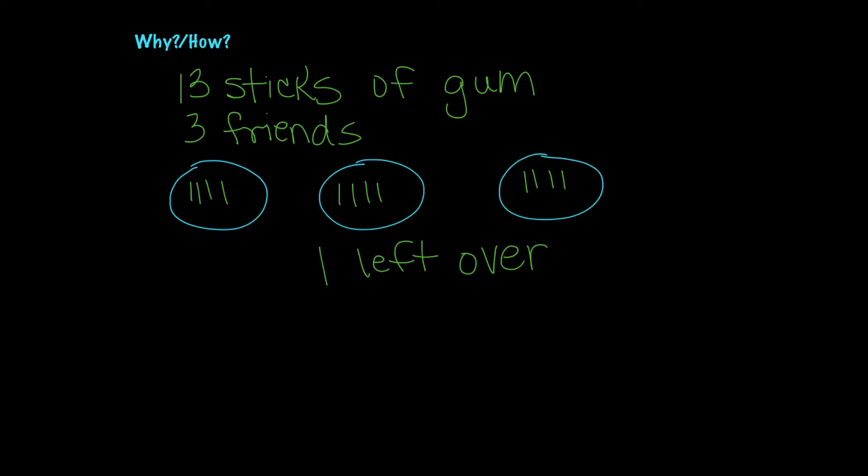So I made three circles for the three friends and I counted until I got to 13. So this means that each person would have four full sticks of gum.